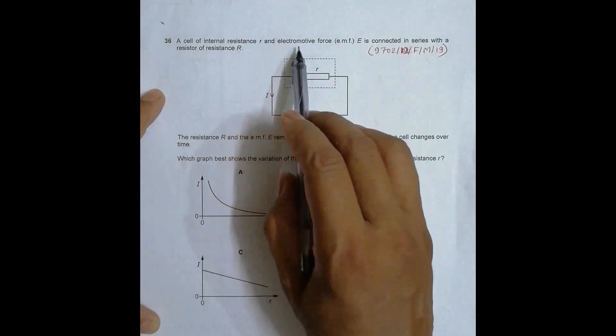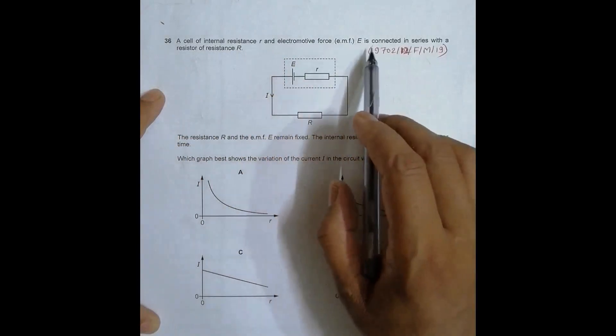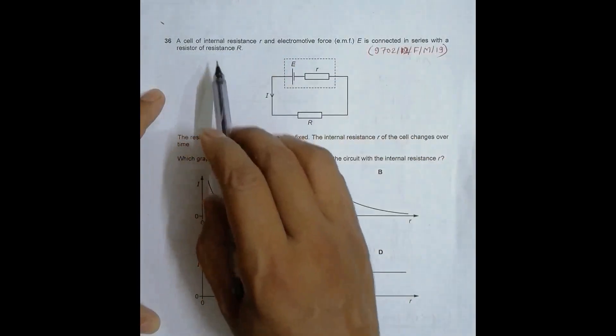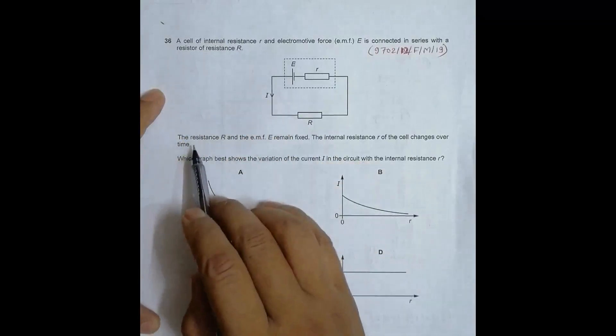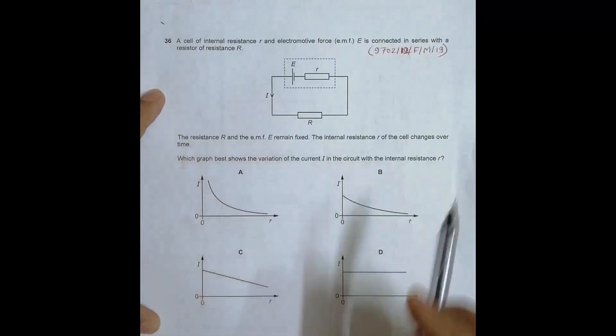It says that a cell of internal resistance r and electromagnetic force EMF E is connected in series with a resistance R. The resistance R and EMF E remain fixed, so they are constant. The internal resistance r of the cell changes over time.